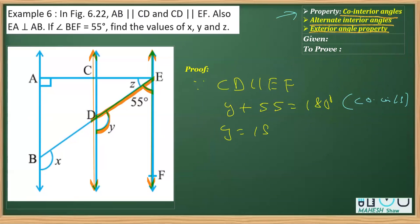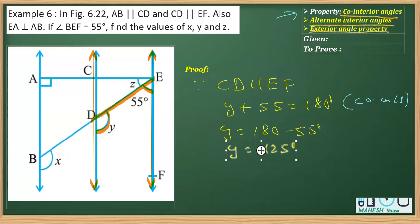If we transpose 55 to the other side, it is 180 minus 55 degrees, so we get y as 125 degrees. That is the value of y.